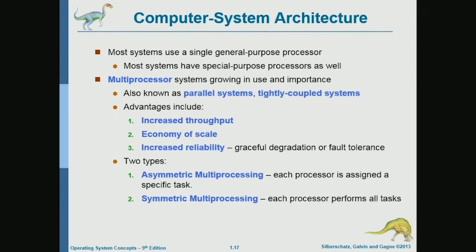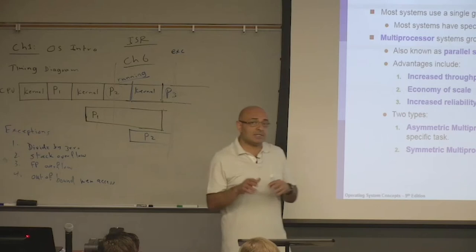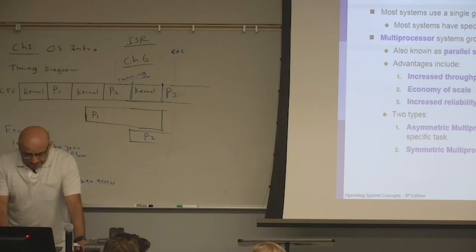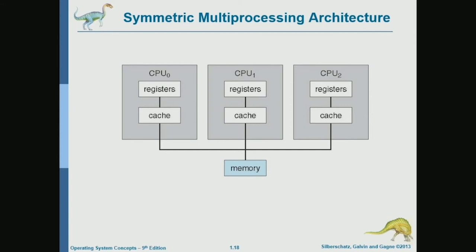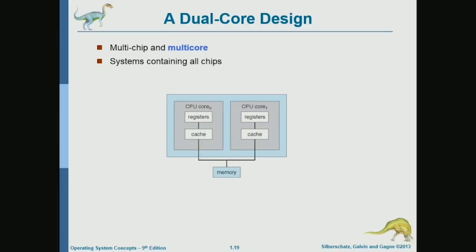Multiprocessor systems — we will talk about multiprocessor scheduling when we get to chapter six on CPU scheduling. You should be familiar with a multiprocessor system. This is a classical multiprocessor system where you have three CPUs, each with its own registers and its own cache. This can also be done on the same chip in a multi-core system, with core zero and core one sharing memory.